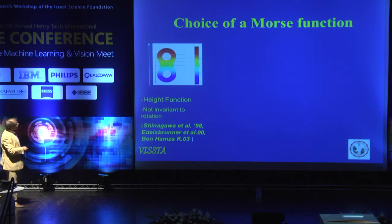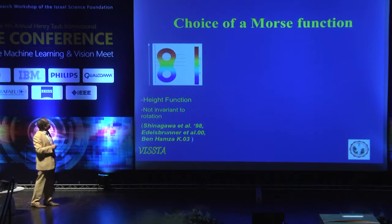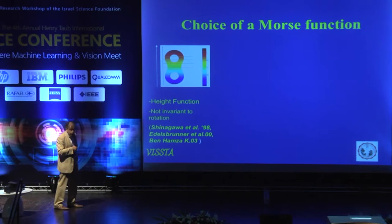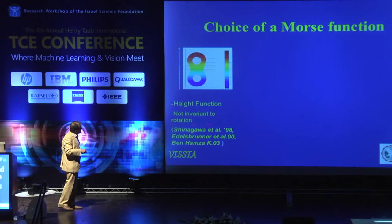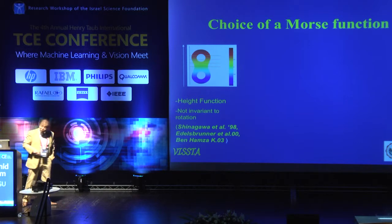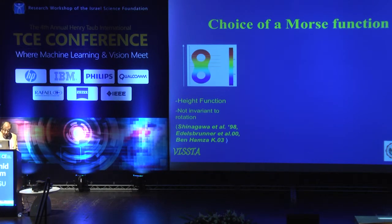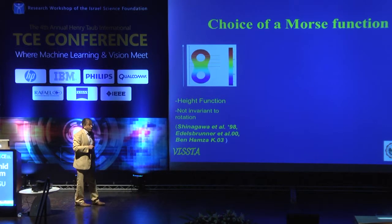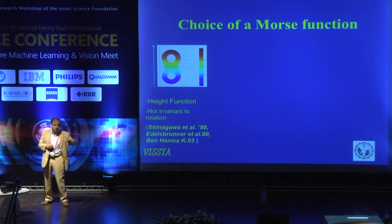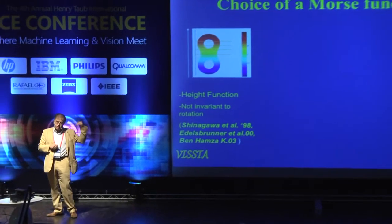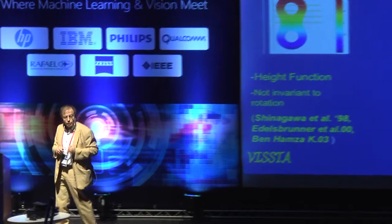Actually, the first height function goes back to the '40s, by a French mechanical engineer who literally defined this height function. It was first used by Shinagawa, then Edelsbrunner, and then a former student of mine took it up from there. The problem is that this thing is not pose invariant. If you took this double torus, turned it on its belly, took the height function, and tried to model it the way I described, you get a totally different story. And for object recognition, that's not very good.